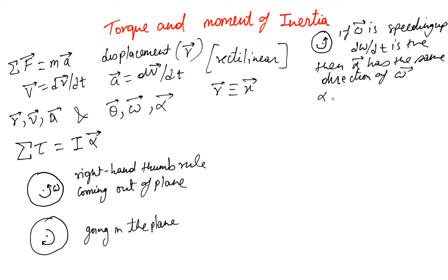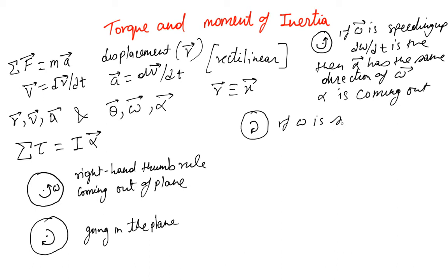So for this disc, alpha is coming out. In a different case where the disc is moving the other way, if omega is speeding up, then d(omega)/dt is positive and alpha is in the same direction as omega. In this case, omega is going in, so alpha is also going in.